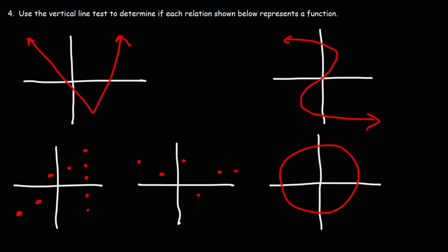When you have a graph, the best way to determine if it represents a function is to use the vertical line test. For the first graph, any vertical line drawn touches the graph at only one point — so yes, it represents a function. For the next graph on the right, a vertical line can intersect the graph at three points, and at another location at five points. Since we can get two or more intersection points, this relation is not a function.